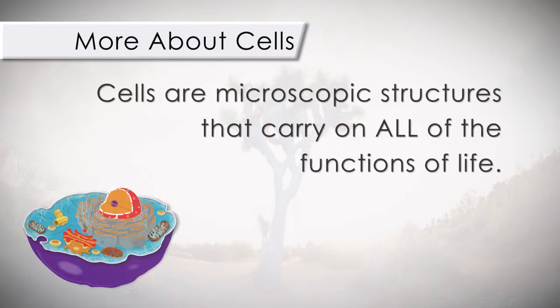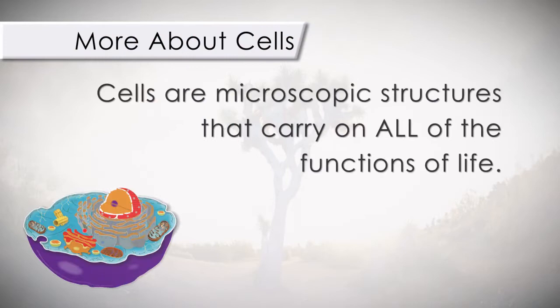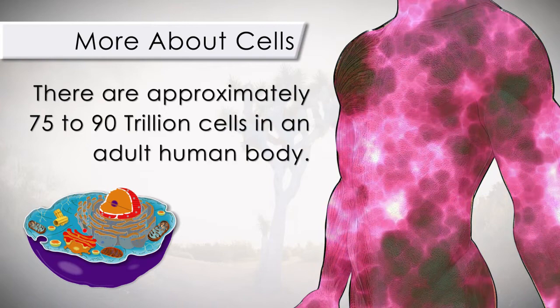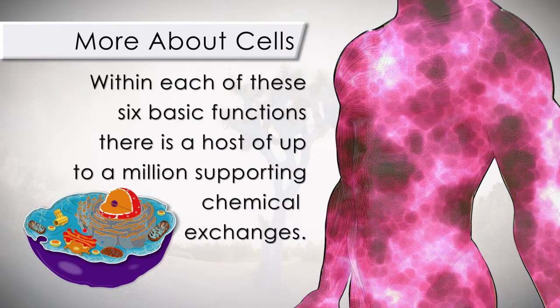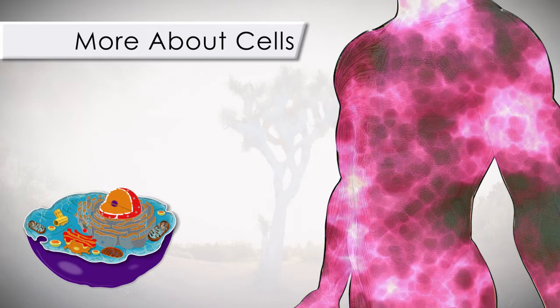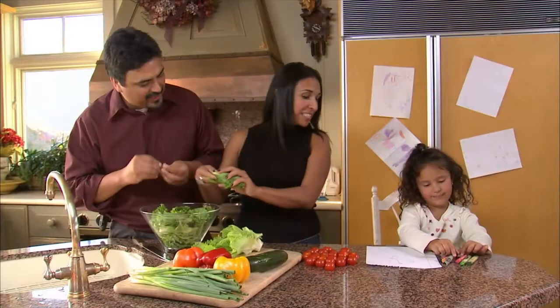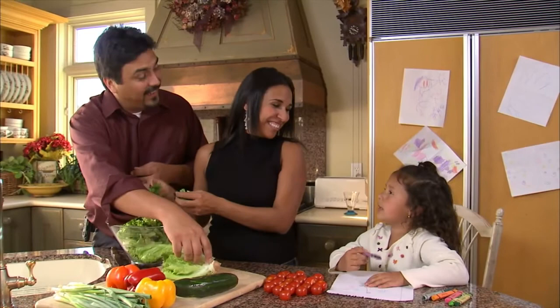Cells are microscopic structures that carry on all the functions of life. In fact, an adult human body is composed of approximately 75 to 90 trillion cells — that's amazing. And what's even more amazing is that within each of these six basic functions, there is a host of up to a million supporting chemical exchanges that need to occur within each cell and with one another in order to sustain life. Let's give our bodies the credit they deserve — we don't even have to think about it; it does it all on its own. The only thing we need to think about and be responsible for is to learn how to keep our bodies working and functioning as they were designed to be: healthy.